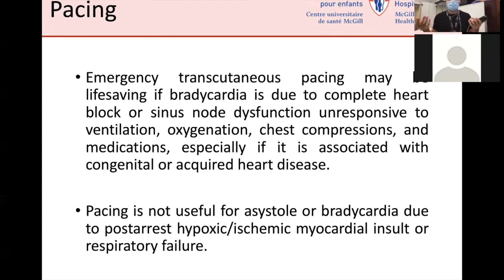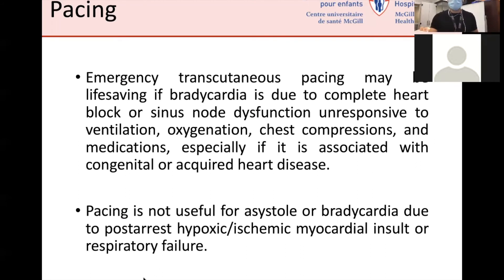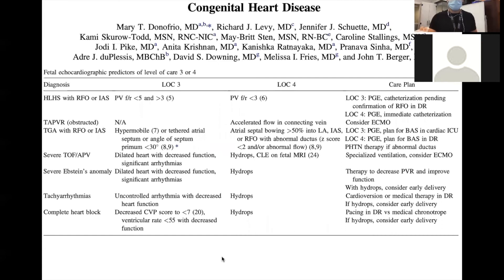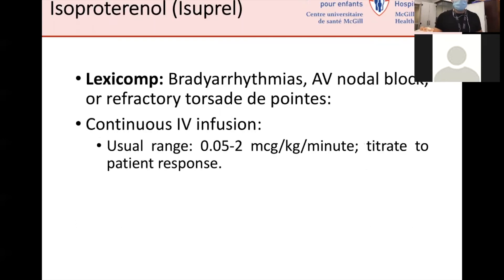Maternal lupus can cause fetal acquired heart disease with inflammation at the AV node, destroying it so that impulses from the atria do not reach the ventricles — resulting in profound bradycardia. One medication that can help is isoproterenol (Isuprel), which tries to accelerate conduction through the AV node.